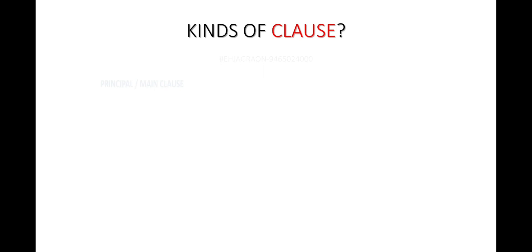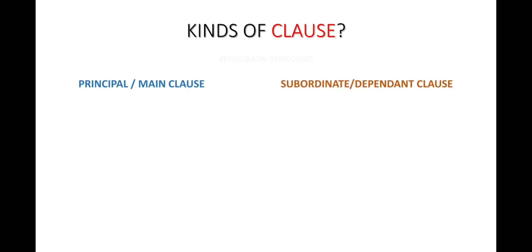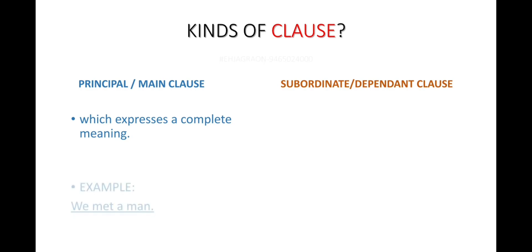There are two types of clauses. The first one is the principal clause, also called the main clause or independent clause. The principal clause expresses a complete meaning — for example, 'We met a man' is a complete thought.